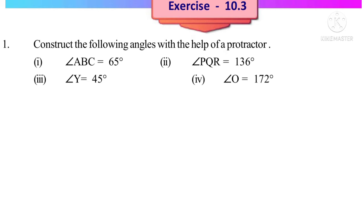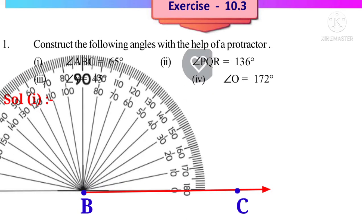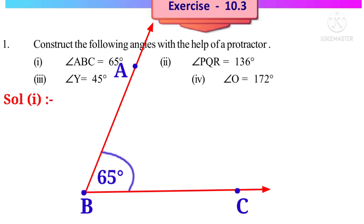Exercise 10.3 — First problem: construct the following angles with the help of a protractor. Solution 1: Angle ABC = 65 degrees. Take any two points B and C and draw a ray through them. Put the base of the protractor on line BC with center at B. On the right-hand side lower scale, 5 lines after 60 — that is 65. Put a point and name it A, then connect BA. Angle ABC is 65 degrees.